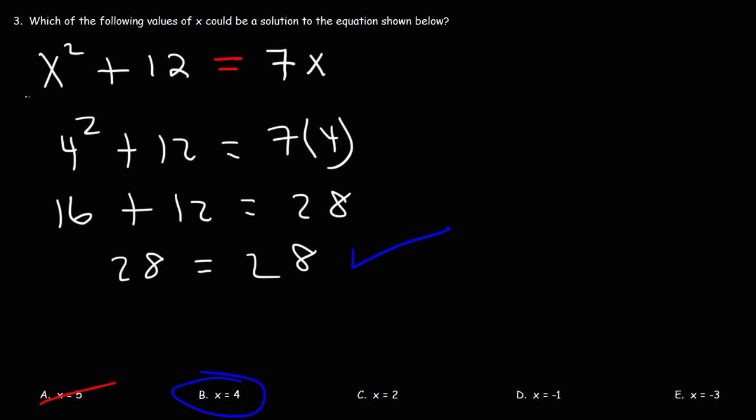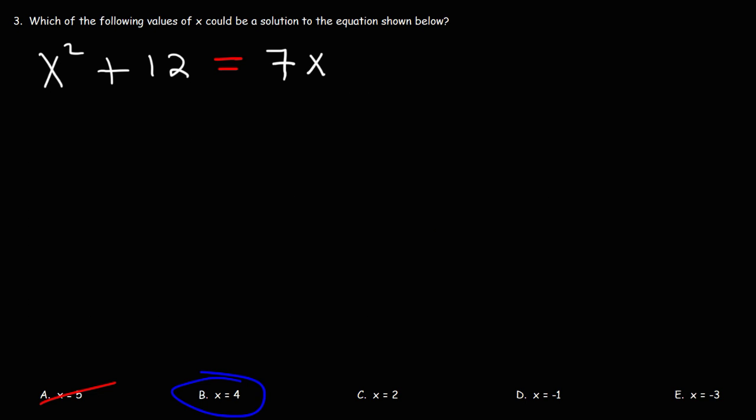Now let me show you another way to get the answer. So what we're going to do now is we're going to move the 7x from the right side to the left side. On the right side, it's positive 7x, but when I switch sides, it's going to be a negative 7x on the other side. So we're going to have x squared minus 7x plus 12 is equal to 0. Now in this format, we have a trinomial with a leading coefficient of 1. And what we can do is we can factor this trinomial to get the solution.